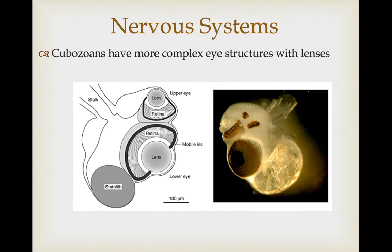Cubozoans have much more complex eye structures. Instead of just ocelli that can sense direction and intensity of light, these animals can actually see—they have a lens and retina so they can form an image. This makes sense since they are very active predators going after large fish, and they need a better visual understanding of their environment.